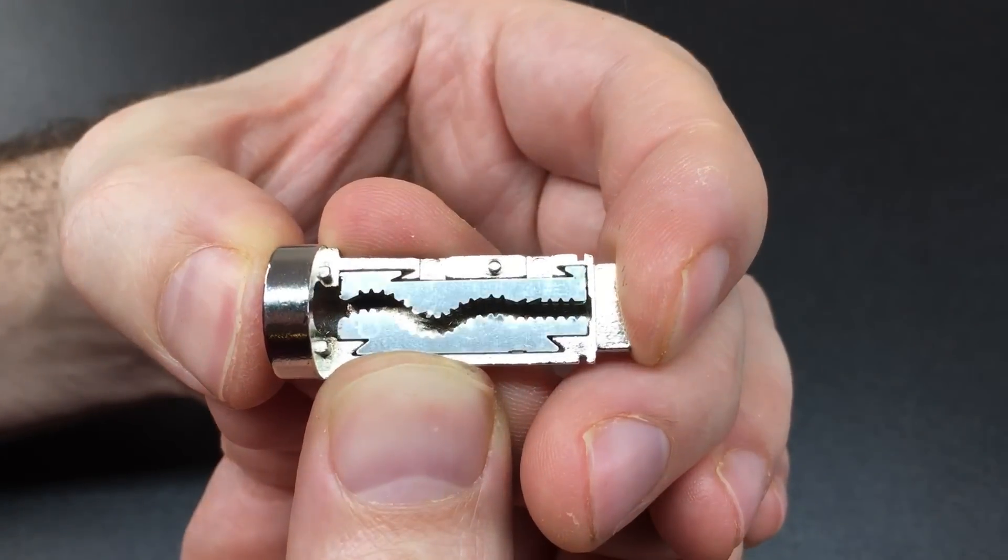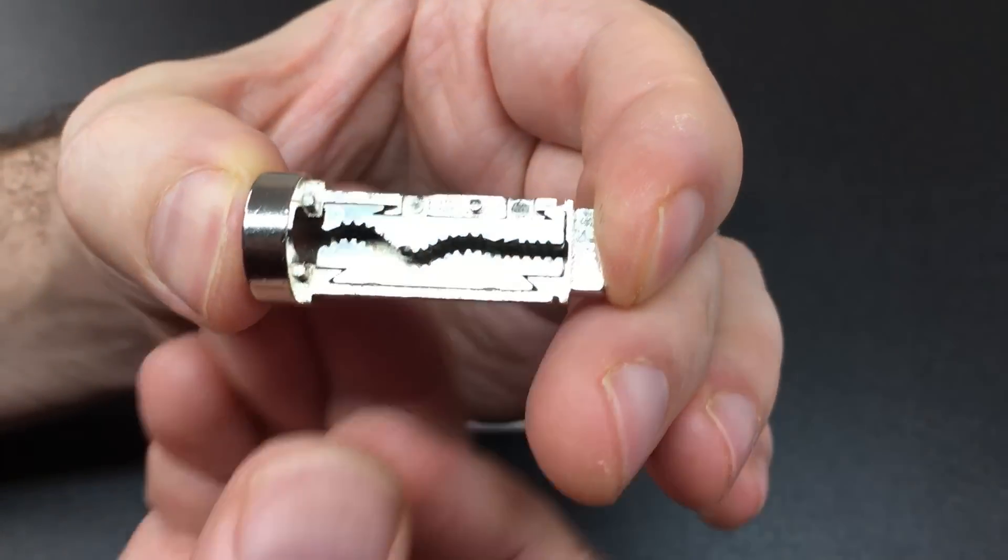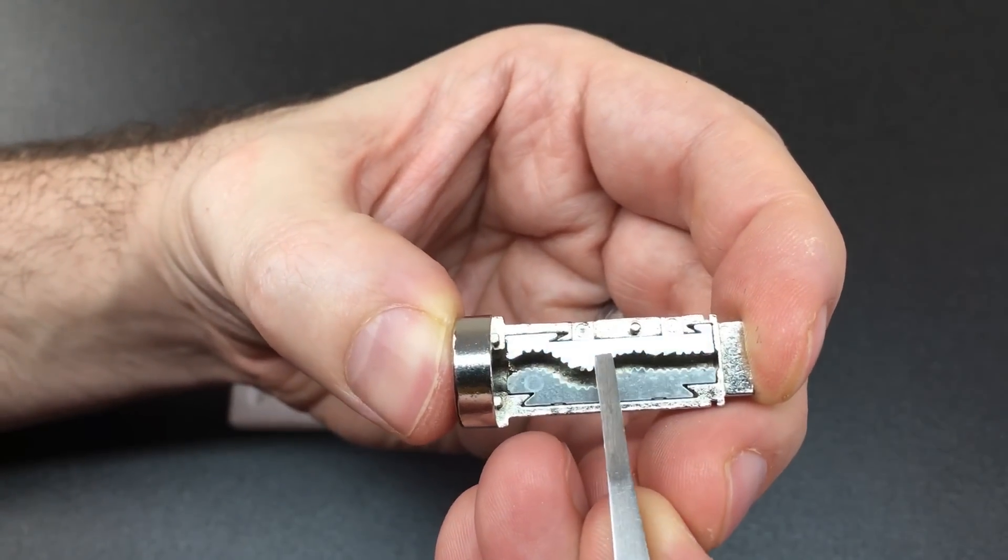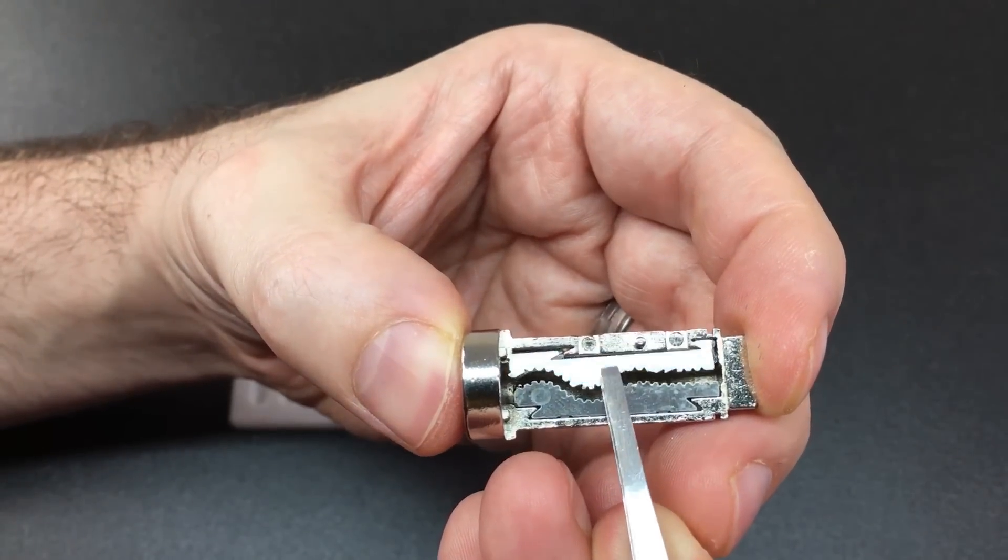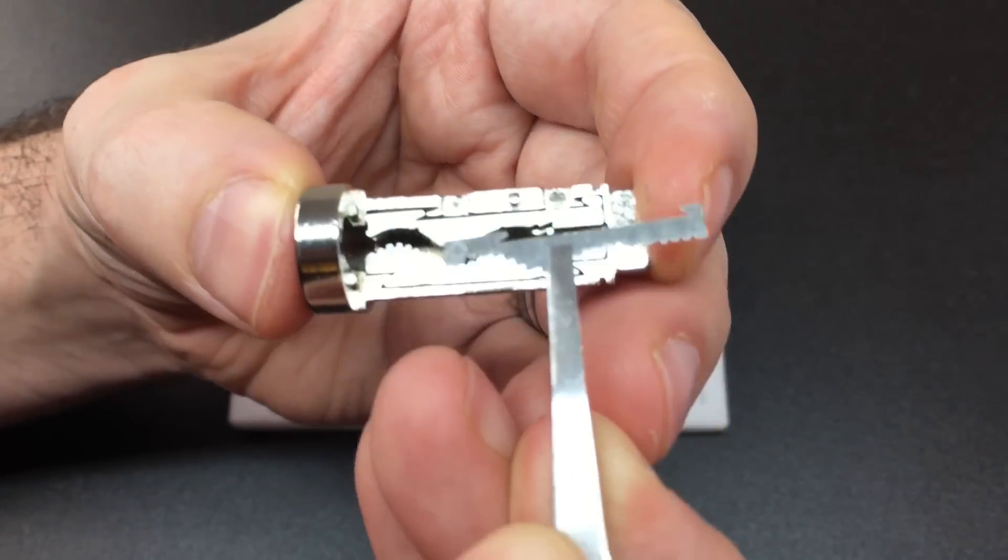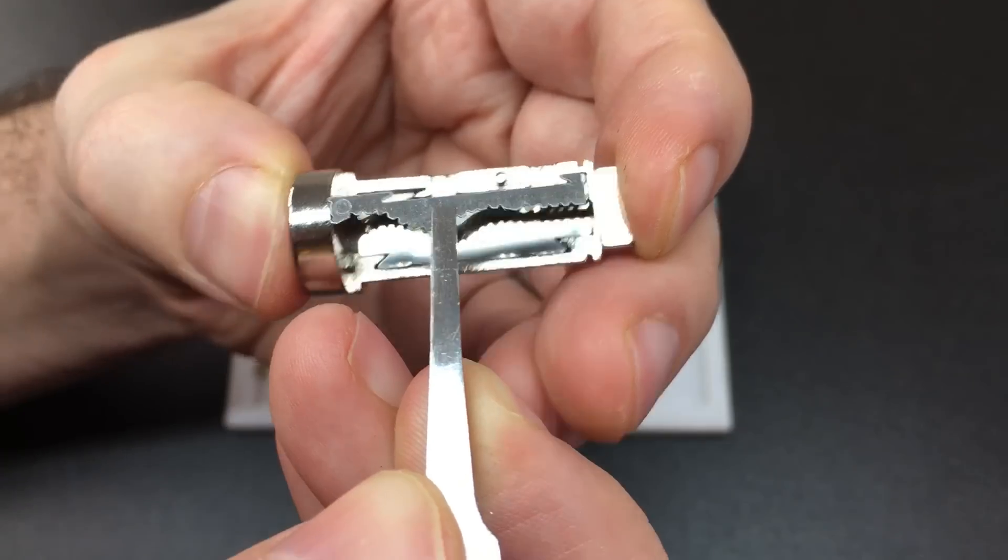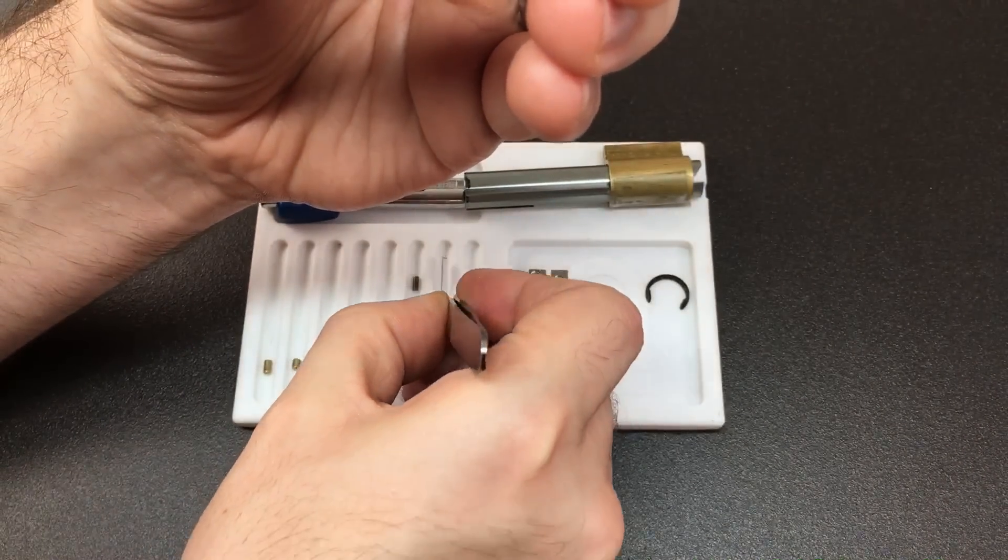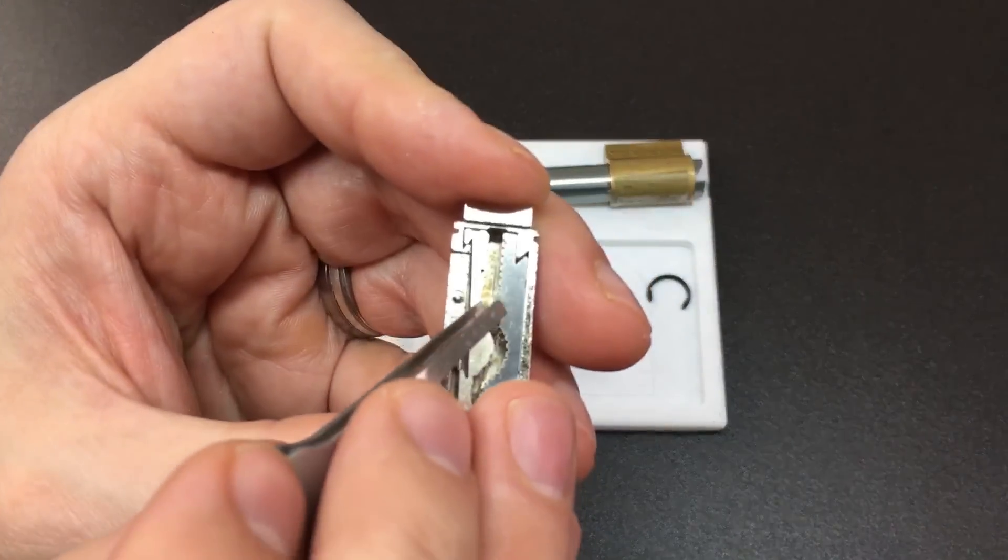The bottom half of the keyway has similar features but it also has these little removable plates which have little serrations and cutouts on them as well just again to stop tools from being able to enter that keyway.